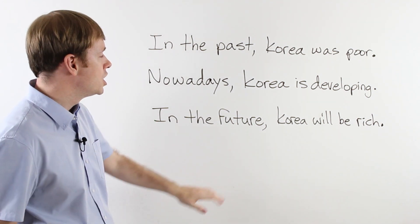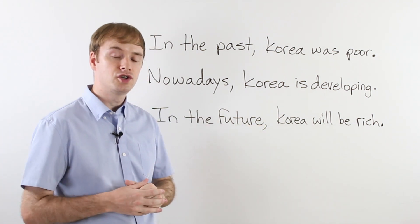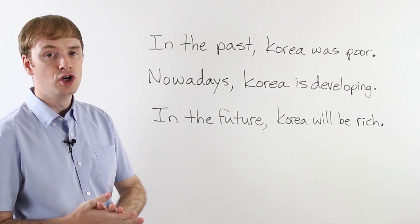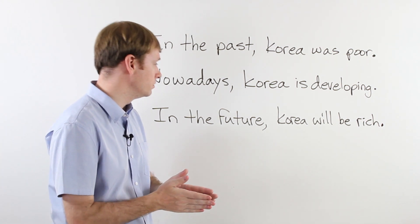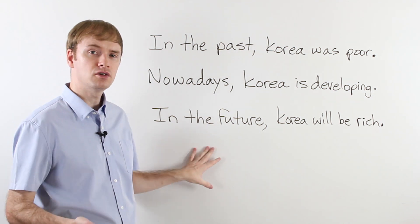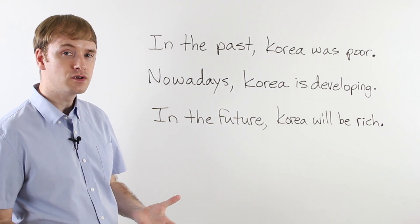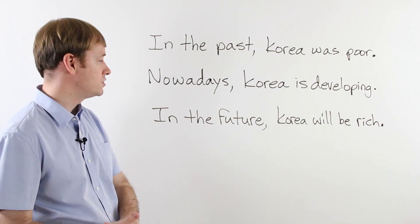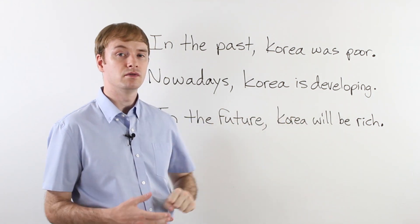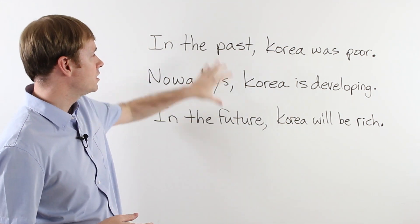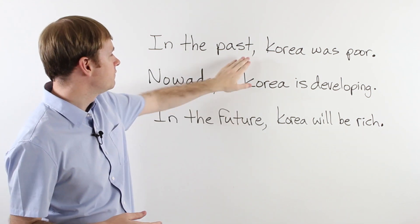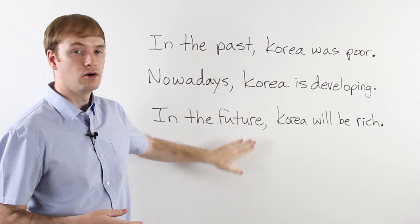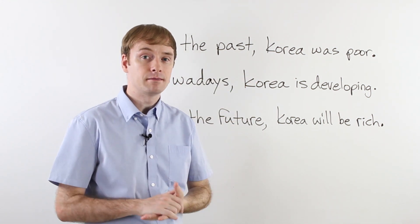And let's go to the future. In the future, Korea will be rich. In the future, far in the future, soon. Maybe soon. Soon, Korea will be rich. So again, use the time expressions in the beginning, followed by a comma there. So let's look at some more examples.